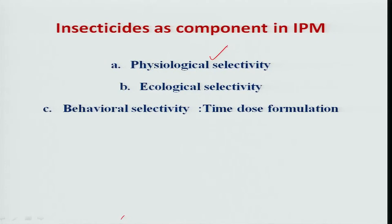Even then, insecticides are one of the major components in insect pest management that everybody can understand. To use insecticides in IPM, we should have three items to be concerned: one is the physiological selectivity, another is ecologically we should select the insecticide for inclusion in the IPM, and the third one is behavioral selectivity.